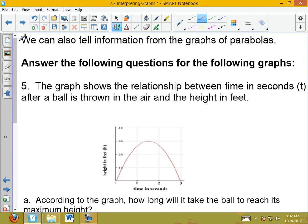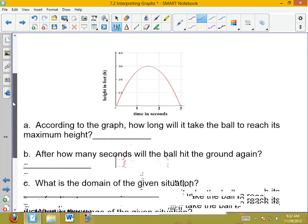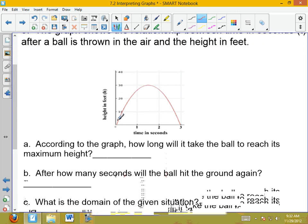Now, we're just going to answer some questions about the parabola. The graph shows the relationship between time in seconds after a ball is thrown in the air and the height in feet. So, this tracks a ball that's been thrown in the air. So, the ball is thrown, reaches its maximum height, and then comes back down to the ground.